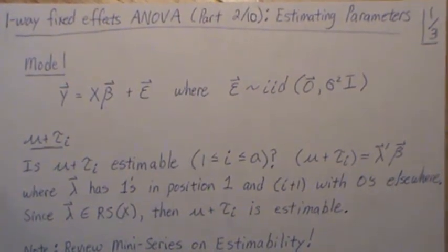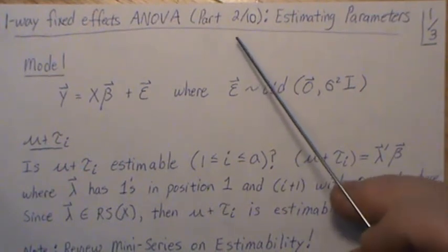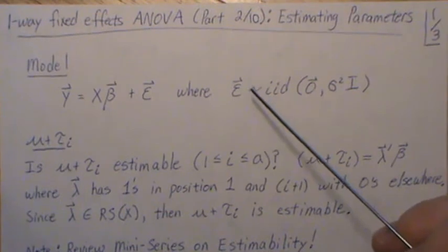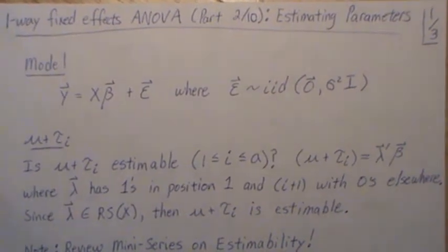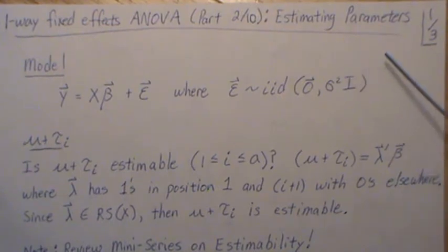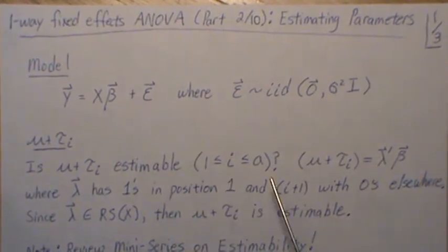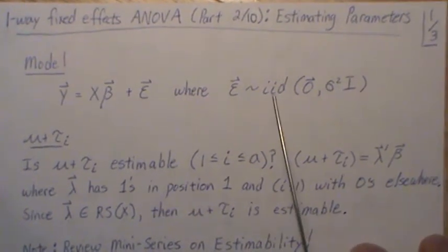Hello, this is the next video in a playlist that I'm calling General Linear Models, Design of Experiments. This is actually part two of a mini-series within that playlist: One-Way Fixed Effects ANOVA. Here we're going to look at estimating the parameters of our model.